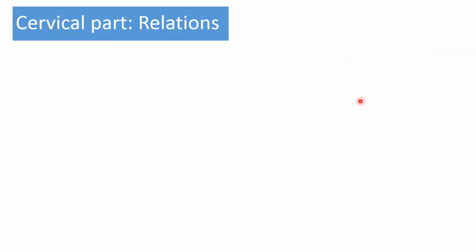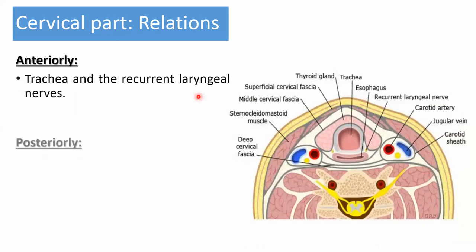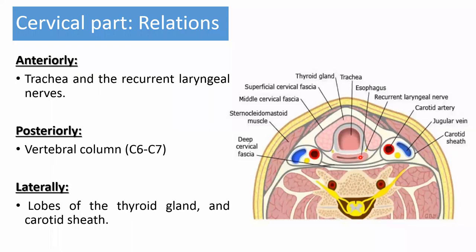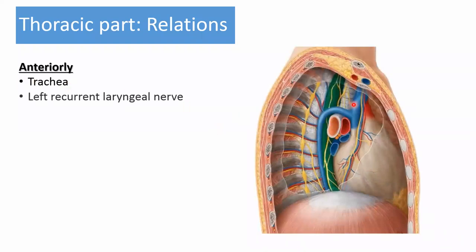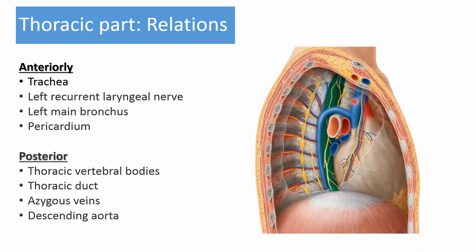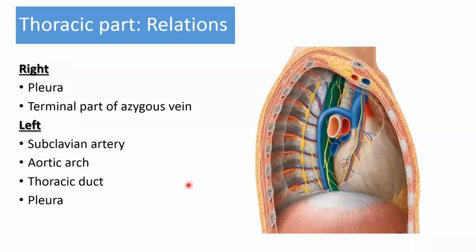Relations of the parts of the esophagus: the cervical esophagus anteriorly has the trachea and recurrent laryngeal nerves; posteriorly the vertebral column at C6–C7; laterally the thyroid lobes and carotid sheaths. The thoracic esophagus anteriorly has the trachea, left recurrent laryngeal nerve, left main bronchus, and pericardium; posteriorly the thoracic vertebral bodies, thoracic duct, azygos veins, and descending aorta; on the right the pleura and terminal part of the azygos vein; on the left the subclavian artery, aortic arch, thoracic duct, and pleura.